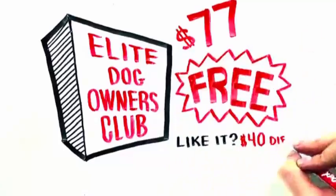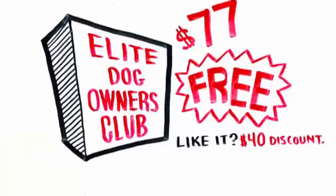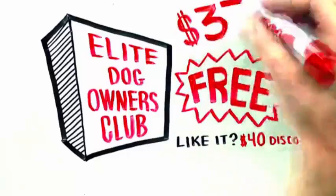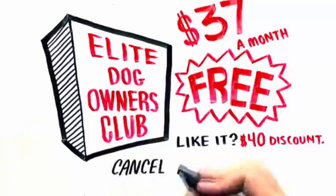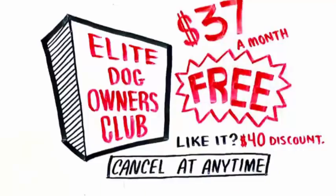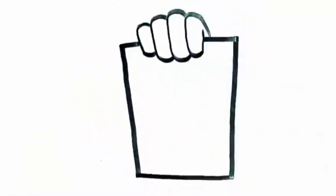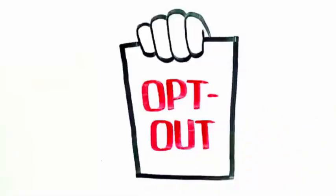And if you like it, we'll give you a $40 discount, so it's yours for only $37 a month after your free trial ends. Of course, if you don't think it's for you, you can cancel at any time during your trial, and you'll never see a charge. And if you don't want it at all, we'll give you the option to opt out of the Elite Dog Owners Club when you get to our secure order form to order the Dog Lovers training course.